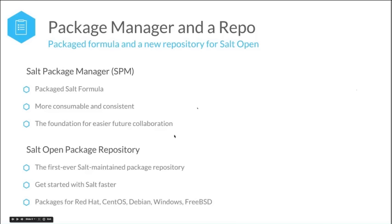The packages we currently have are for Red Hat Enterprise Linux and its derivatives — versions 5, 6, and 7 — Windows, Debian, and we almost have our Ubuntu packages up and ready. All of the packages on our repository are signed by our private key. One thing to note about the SALT Package Manager is that in this release it does not yet support cryptographic signing of SALT packages, but that is on the near-term roadmap, hopefully in the next release. For SALT's open package repository, we currently have packages for 32-bit and 64-bit x86 architectures only.